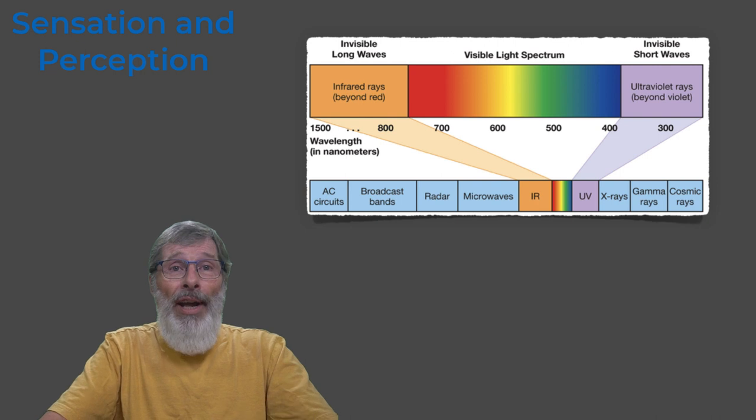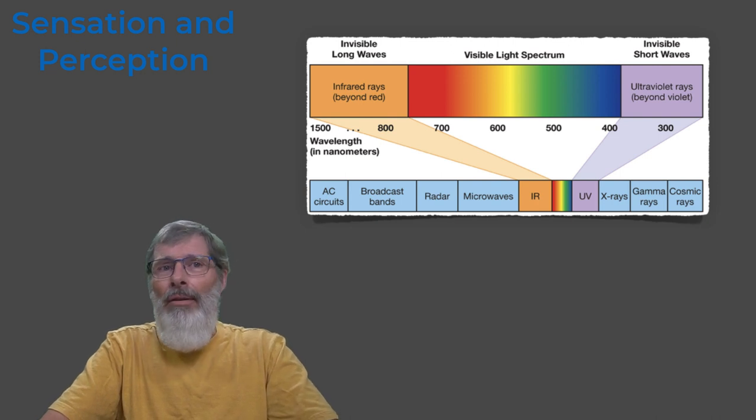Now Sir Isaac Newton discovered the prism that could break light into different colors. Colors of the spectrum include red, orange, yellow, green, blue, indigo, and violet.